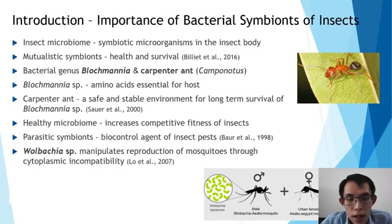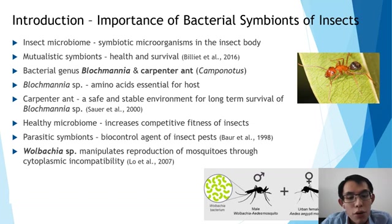Like all living organisms, insects harbor symbiotic microorganisms in their body. These microorganisms can be mutualistic symbionts that are important for the health and survival of insects. An example of this are the bacteria from the genus Blochmannia in the carpenter ants.